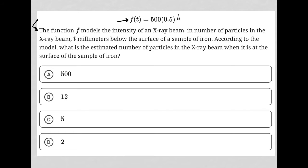The question goes on to say the function f models the intensity of an x-ray beam and number of particles in the x-ray beam t millimeters below the surface of a sample of iron. According to the model, what is the estimated number of particles in the x-ray beam?